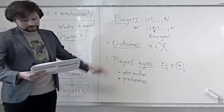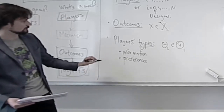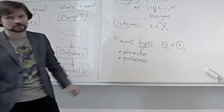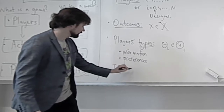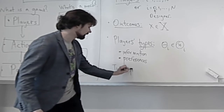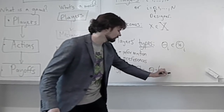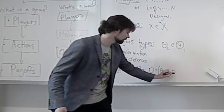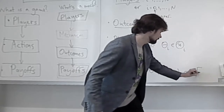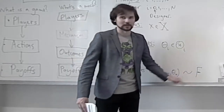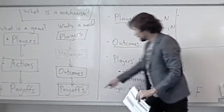What is missing compared to a game? We should impose a distribution on types. The type profile — a vector of all players' types θ₁, ..., θₙ — is distributed according to some distribution with CDF capital M. This distribution is commonly known by all players including the designer and is agreed upon by all players. Finally, we have payoff functions, which we represent as utility functions uᵢ.